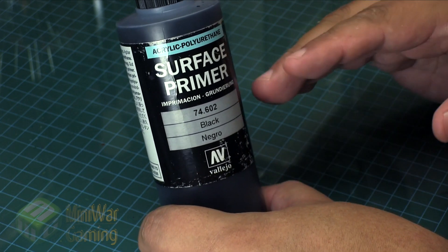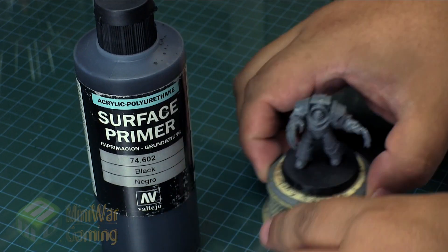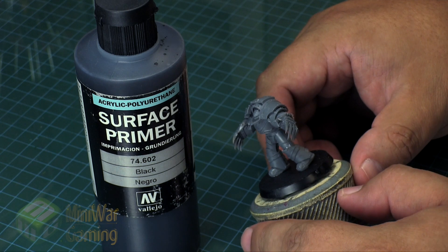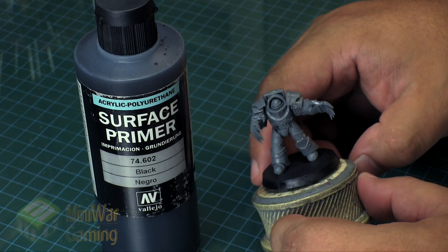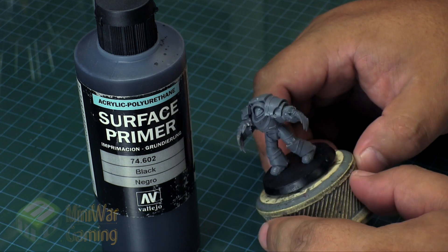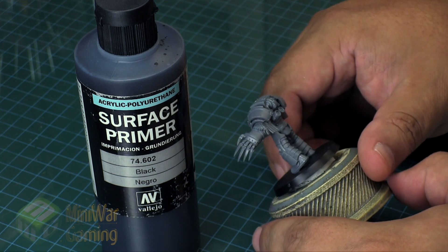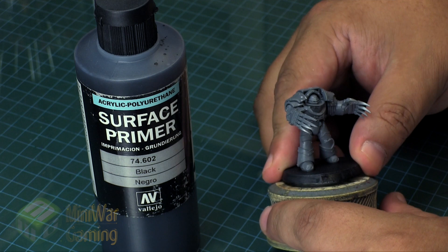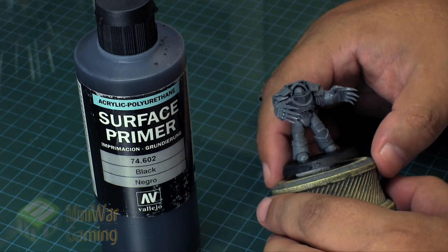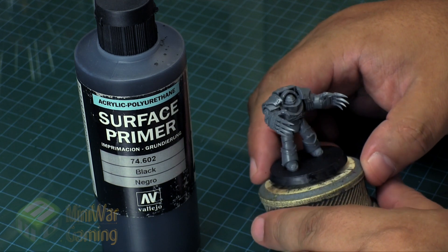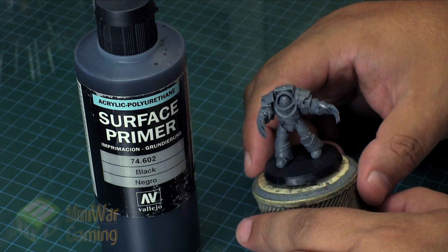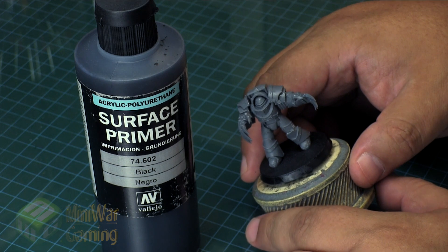So with that said, let's have a look at an example here. I've got this little terminator, plastic terminator, and we are going to give him a coat of surface primer. You'll see basically how I quickly go about priming these models. Now a lot of people will prime models differently - there is no really right or wrong way. It's really up to you and your experience on how much to lay down.